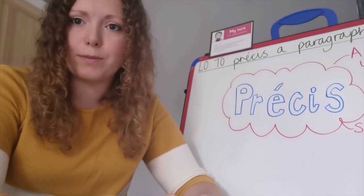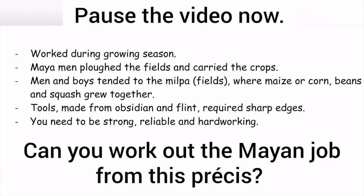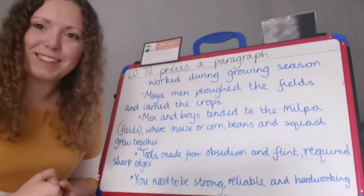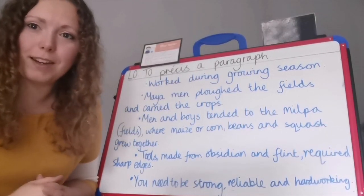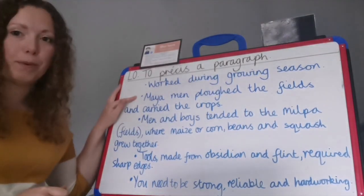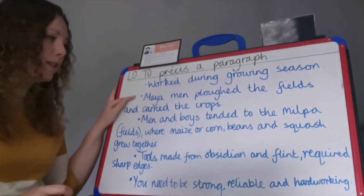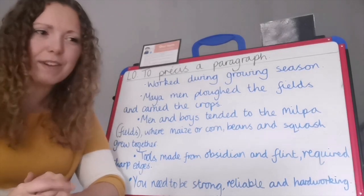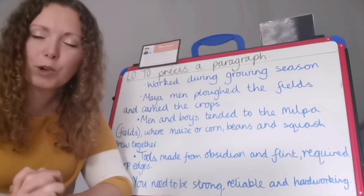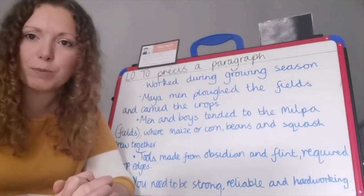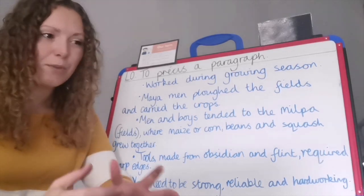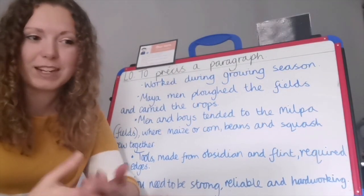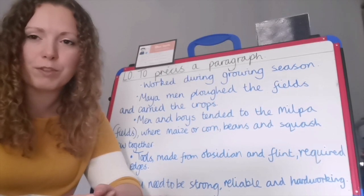Pause the video in a second and see if you can work it out. Welcome back. Did you work out what job it was? That's right — it's a farmer. I think it's a farmer because of this bullet point. This one says: Mayan men ploughed the fields and carried the crops. Ploughing fields is a job that farmers do. They didn't have any animals or anything to help them plough the fields — they had to do it all by hand. Nowadays, farmers use machinery to help with this, but as a Mayan this job would have been so much hard work. It would have been worth it because they could eat the food and things they produced, but I bet it was tough in the sweltering heat.